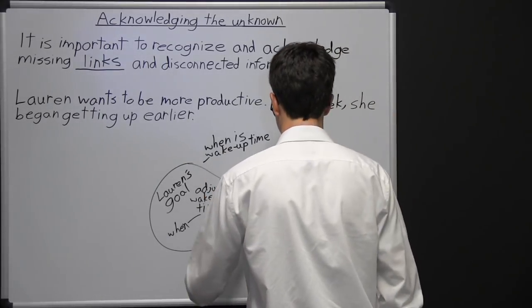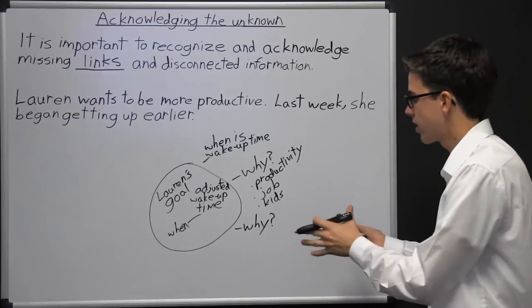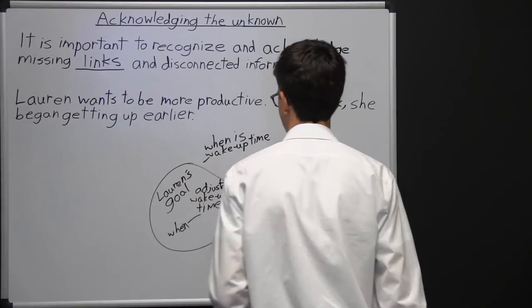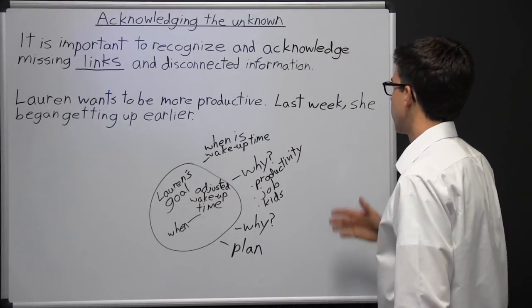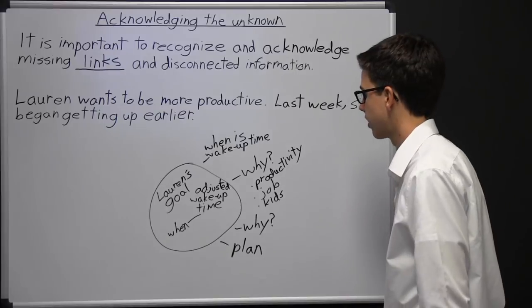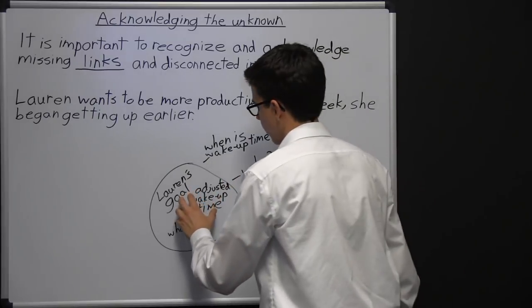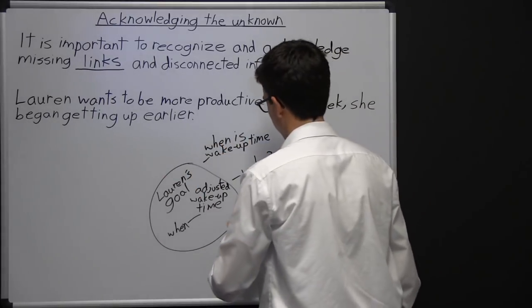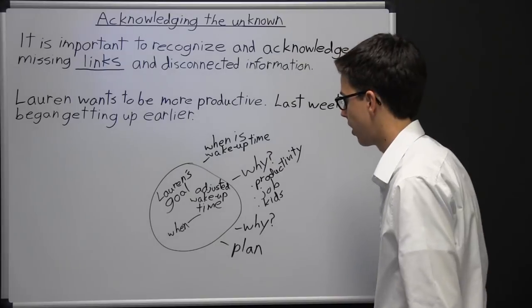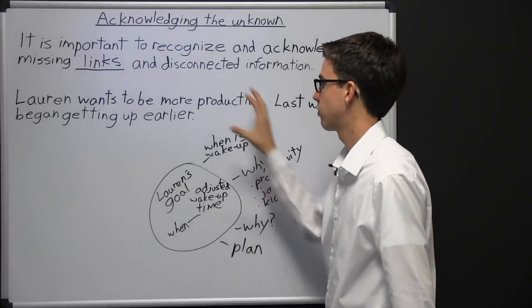Another thing we don't know is why she wants to be more productive, and how she plans to become more productive. We can infer that her plan for being more productive is to get up earlier, but we don't really know that because there's a missing link. There's a little bit of information we do know — very limited. Information outside is stuff we don't know. I could fill up this whole whiteboard and hundreds of other whiteboards with things that we don't know.